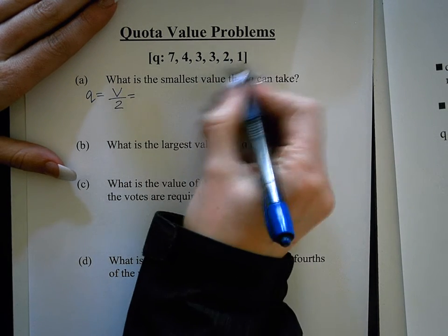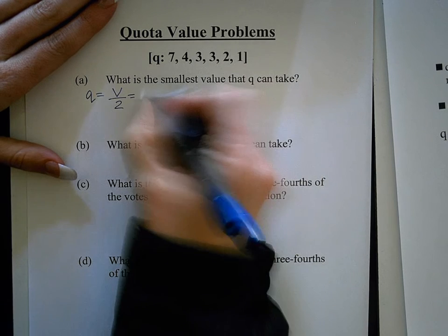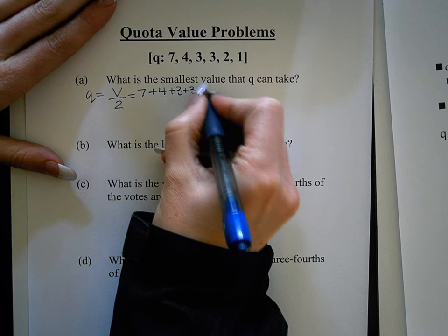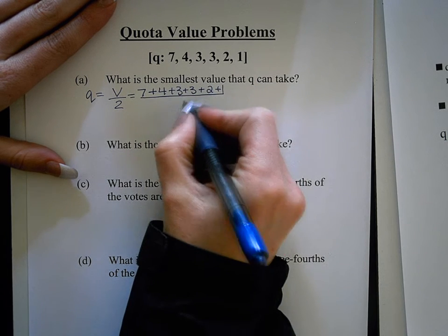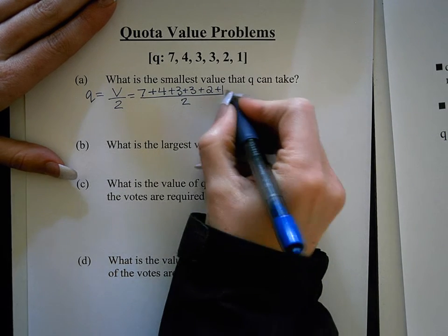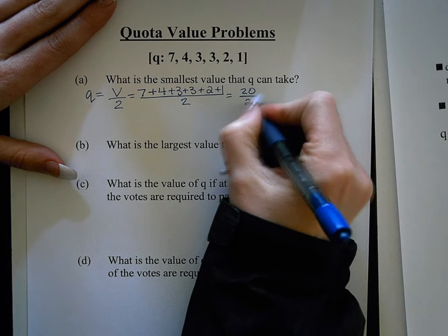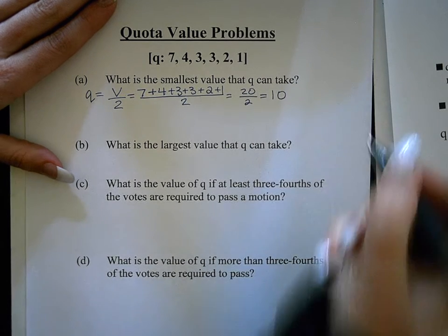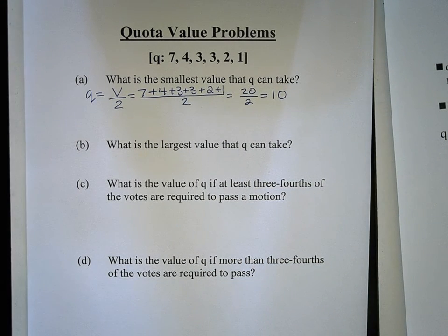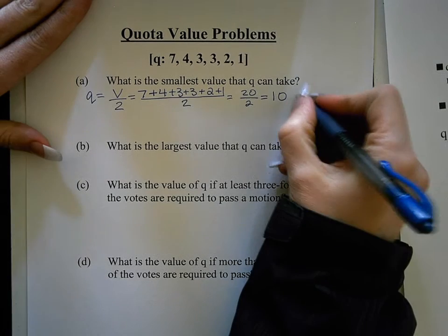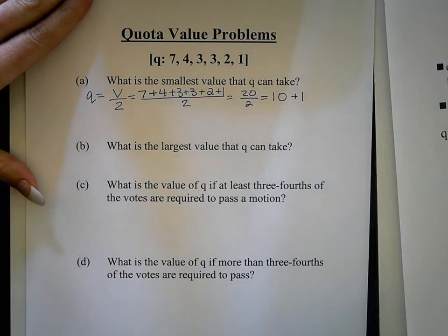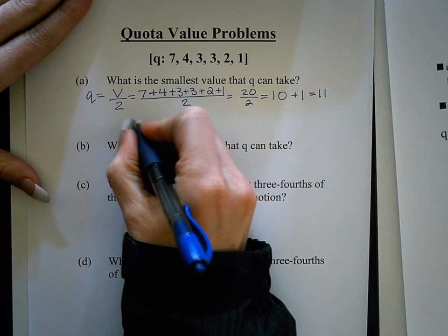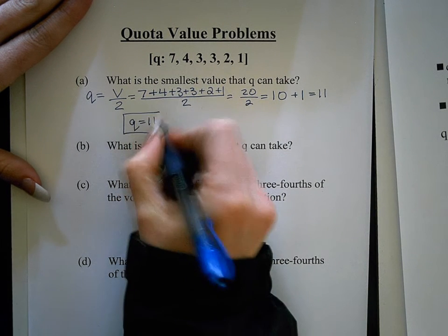We add up all the players' weights: seven plus four plus three plus three plus two plus one, divided by two. All of these numbers add up to 20, so it's 20 divided by two, which equals 10. That is exactly 50%, and since the quota cannot be 50%, it has to be over 50%, we add one to get 11. So the smallest value that the quota can be is 11 for this example.